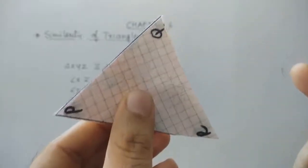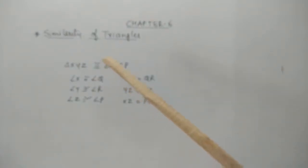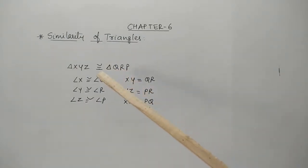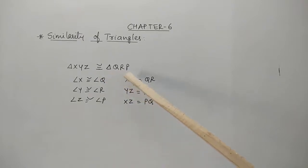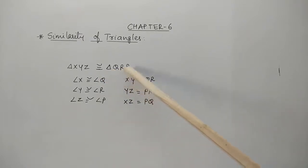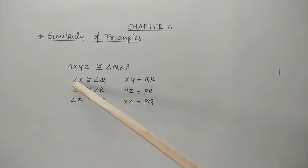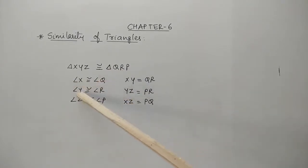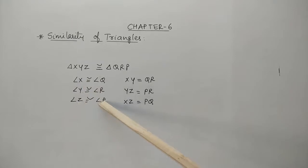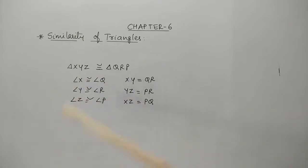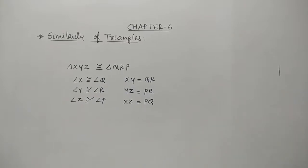Remember, where these two triangles are congruent — here you can see that XYZ is congruent to QRP. I have written QRP, not PQR. So here angle X is congruent with Q, Y congruent with R, and Z congruent with P. These are called corresponding angles. The words 'corresponding angles' and 'corresponding sides' are very important.